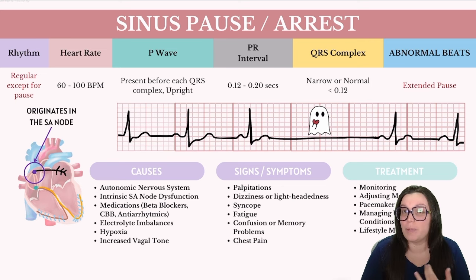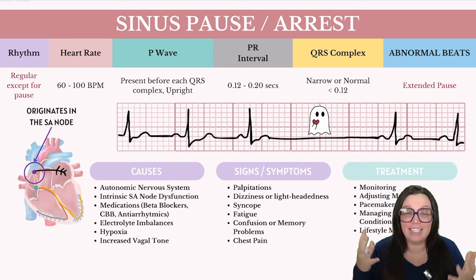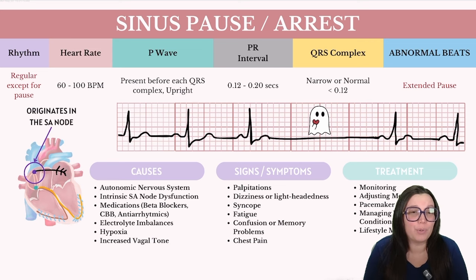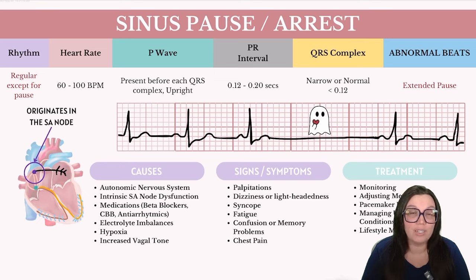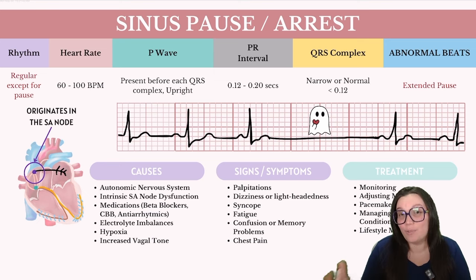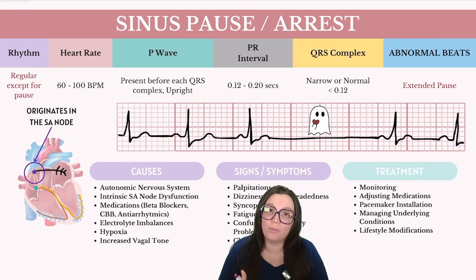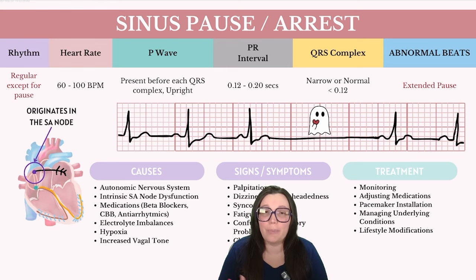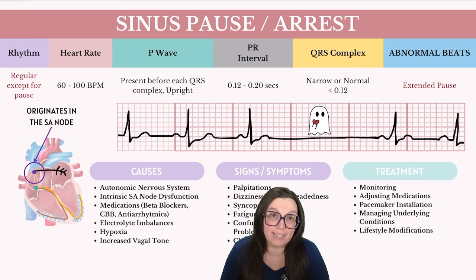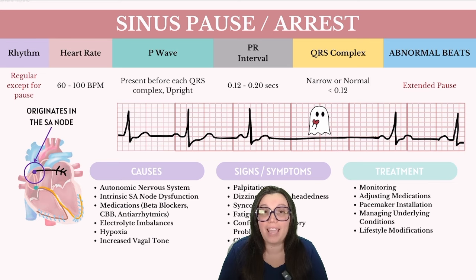Sinus pause or arrest can manifest through various signs and symptoms such as palpitations, dizziness, lightheadedness due to reduced cardiac output. We may even see syncope if the pause is prolonged, occasional fatigue, and in older adults we can see confusion or memory issues from transient reduction in cerebral blood flow. On rare occasions, ischemic-related chest pain may occur. Treatment for sinus pause or arrest aims to address its underlying causes and severity — we may need to adjust medications or, in other cases, implant a permanent pacemaker if we see repeating episodes.